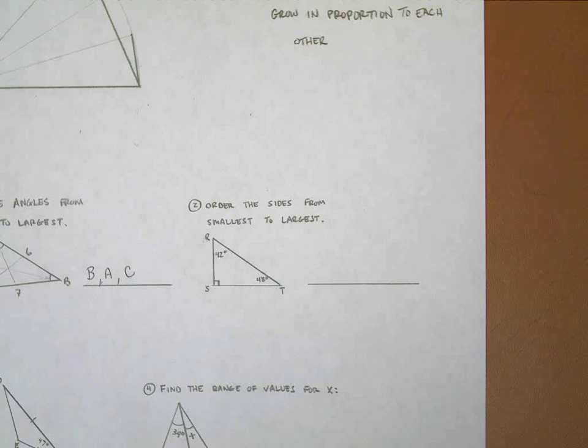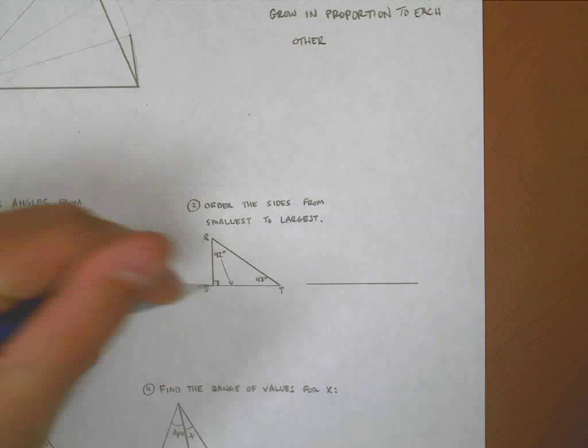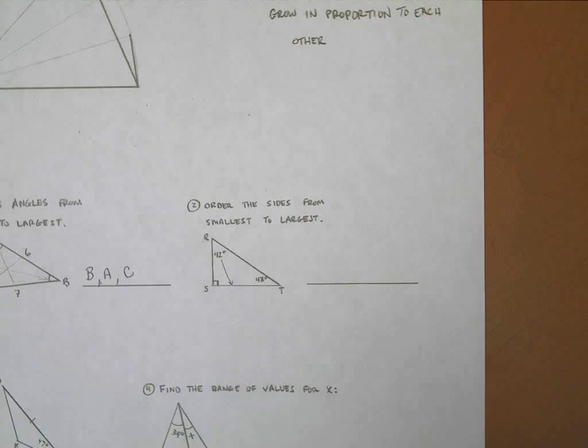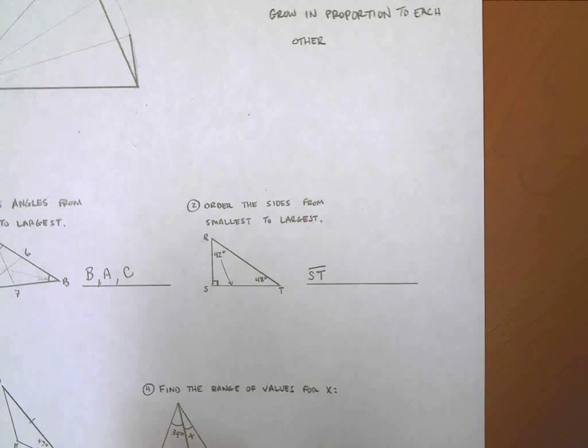Now that I know that, I know that the smallest side goes across from the smallest angle. There's the smallest angle, so the smallest side is going to be the one across from it. That is the side from S to T. I don't have another label for that, so I'm going to call that side ST, line segment ST.